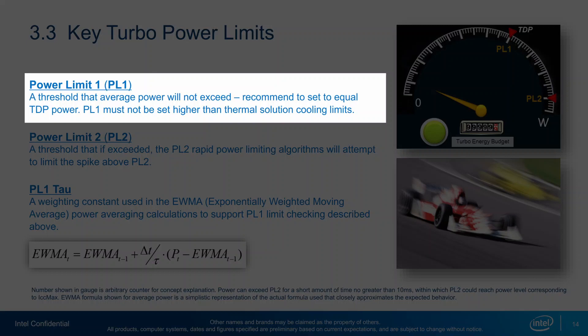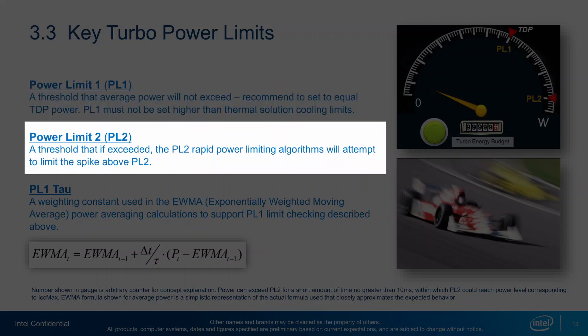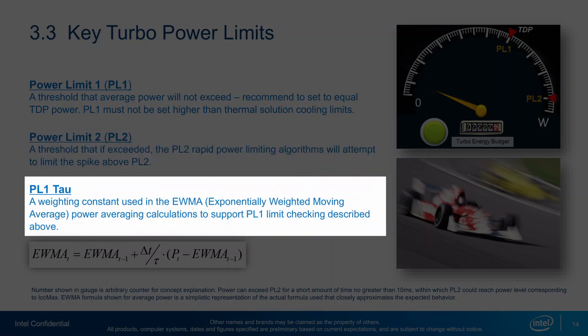Power Limit 1, or PL1, is the threshold the average power will not exceed. Historically, this has always been set to Intel's advertised TDP. PL1 should not be set higher than the thermal solution cooling limit. Power Limit 2, or PL2, is the maximum power the processor can use for a limited time. Tau, in seconds, is the time window for calculating the average power consumption. The CPU will reduce frequency if the average power consumed exceeds PL1.